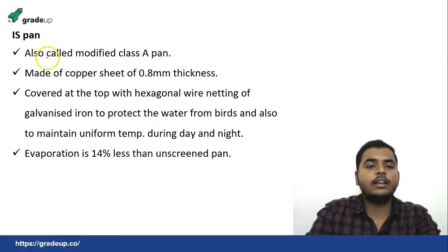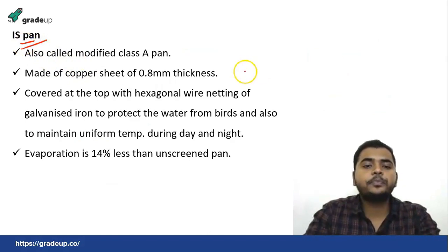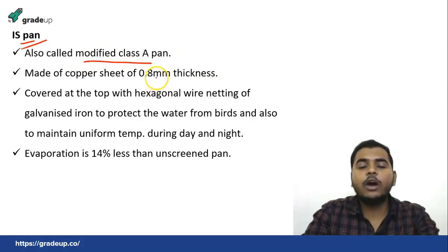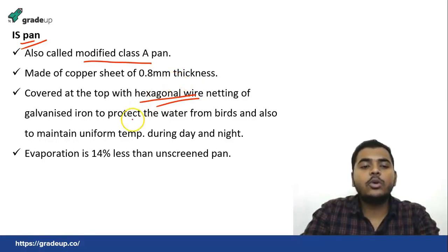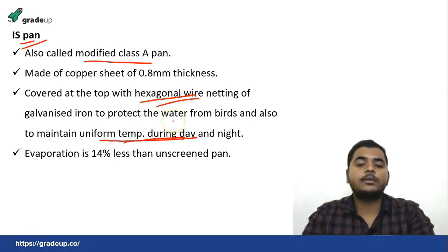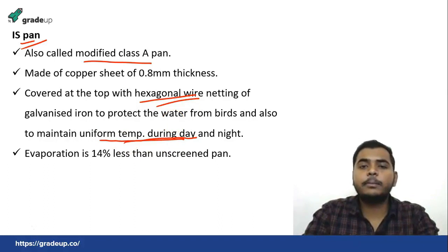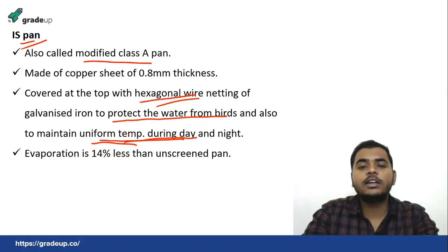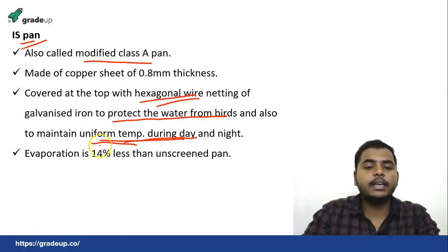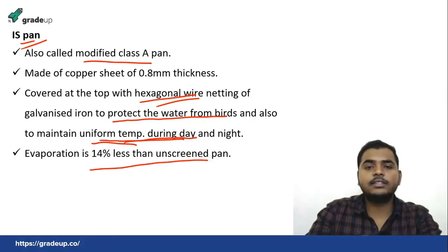The second type is the IS pan or Indian Standard pan, used by the Indian Meteorological Department. It is also called a modified Class A pan. It consists of a hexagonal wire netting, which serves two purposes: first, to protect the water from birds; and second, to maintain uniform temperature during day and night. Due to this wire netting, evaporation in the IS pan is 14 percent less than the unscreened pan.